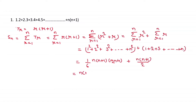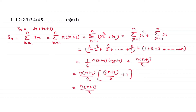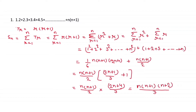We take out the common factor n(n+1)/2. Inside we get (2n+1)/3 + 1, which simplifies to (n+4)/3. Wait, simplifying further: we take n(n+1)/2 times (2n+1)/3 + 1, which gives us n(n+1)(n+2)/3 after cancelling the 2.